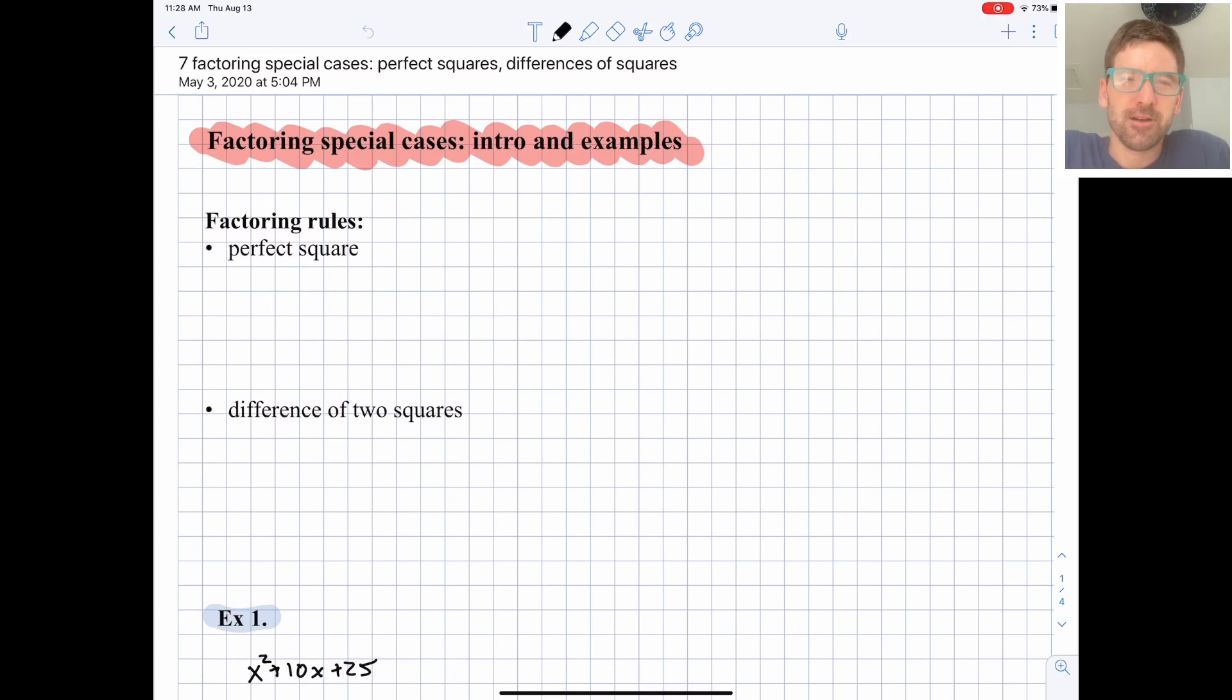These are shortcuts or efficiency tips. If you forget them, you can always just follow the general rules for factoring quadratic trinomials. But if you notice these patterns, you're going to save yourself a ton of time. So I really suggest that you learn it and practice it.